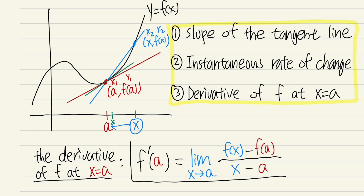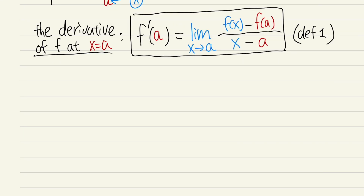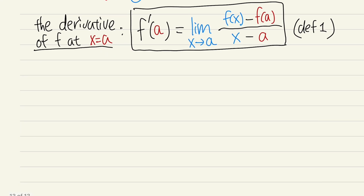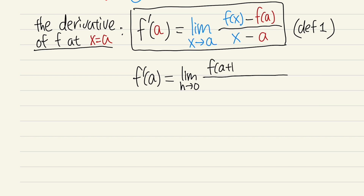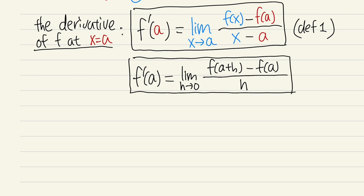There is another equivalent definition I'd like to go over. f prime of a — Definition 2 — is the limit as h approaches 0 of f of a plus h minus f of a, all divided by h. Let me box this. These two definitions are equivalent.